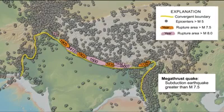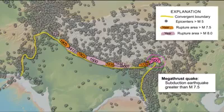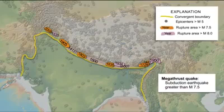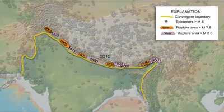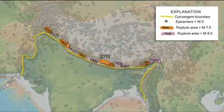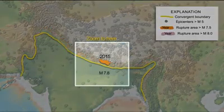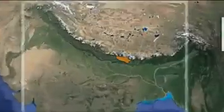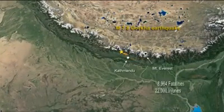The magnitude 8.6 Assam-Tibet event in 1950 was the 10th largest earthquake of the 20th century. On April 25, 2015, the magnitude 7.8 Gorkha earthquake started 15 kilometers beneath the epicenter northwest of the Nepal capital of Kathmandu, and ruptured 100 kilometers toward the east.